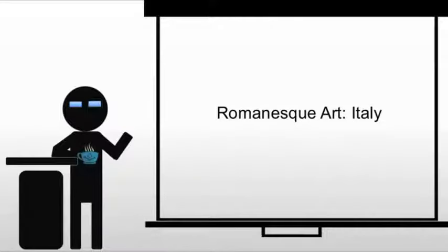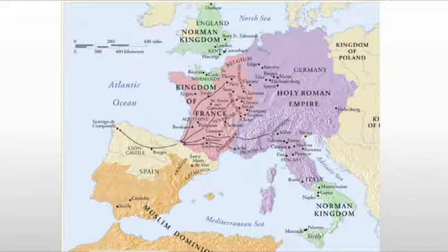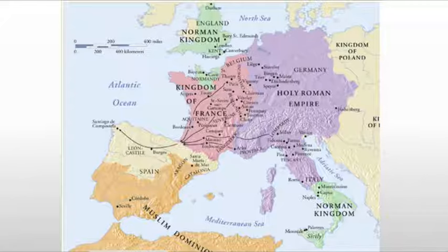We're dealing with the Romanesque south of Milan, really in modern-day Italy. We see a lot of variation in Italy, more so than in any other region, because they're heavily influenced by ancient Roman culture as well as early Christianity — we're very near the seat of Christianity in Rome. We see a less experimental form, and a form that more closely resembles early basilica types.